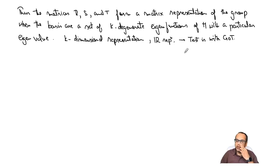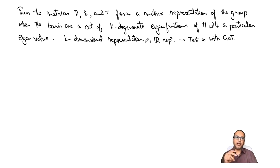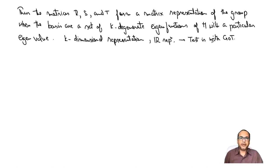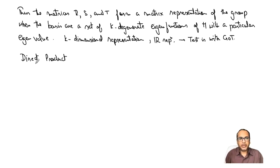This k-dimensional representation will also be an irreducible representation. We have seen in the C3v point group that when we started with px we got a two-fold degenerate representation which was irreducible, and we can always test it. So whenever eigenfunctions give a k-fold degenerate eigenvalue, the IR representation obtained using those wave functions as the basis set will be k-dimensional and irreducible.